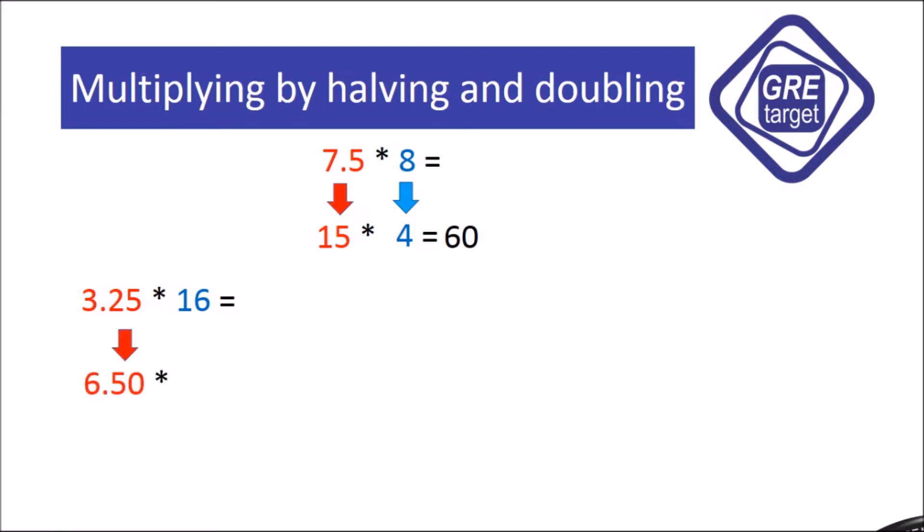Once again, we double any one number - we are doubling 3.25 to 6.50. We halve one number - we are halving 16 to 8. Now go for one more step so we can get the answer easily. We are doubling 6.50 to 13, and we are halving 8 to get 4. We all know that 13 fours are 52.